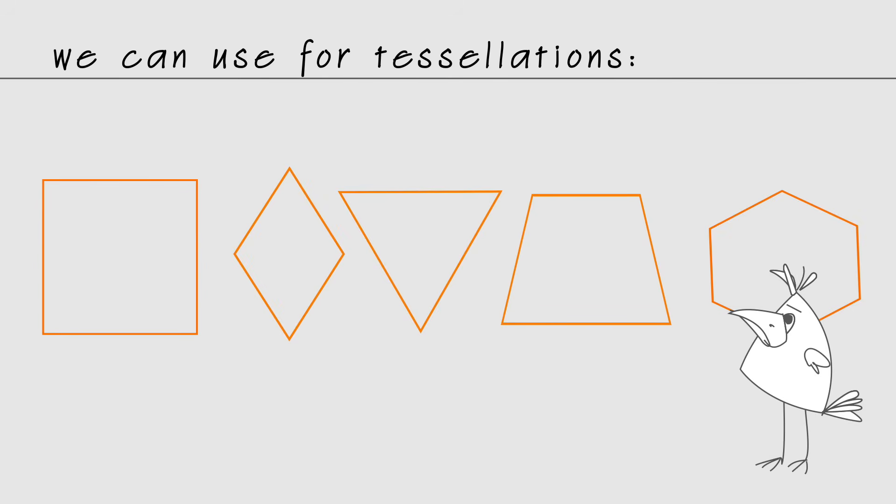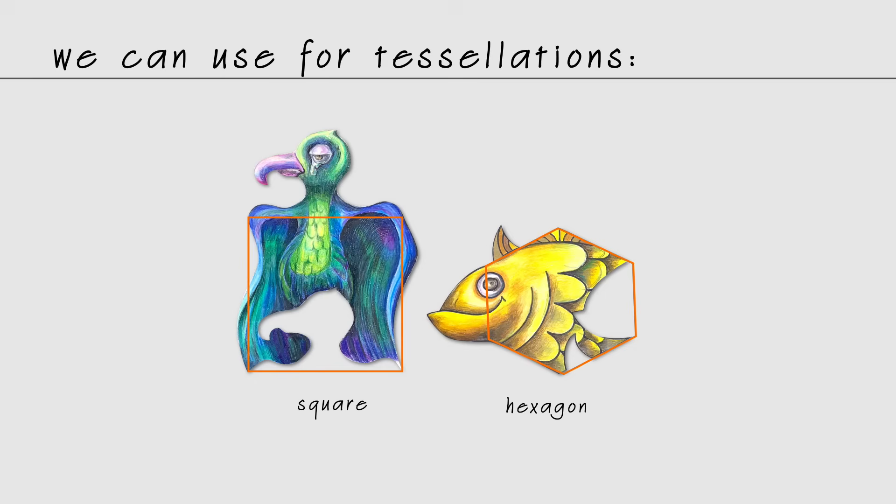So here are the basic shapes that can tessellate: rectangles and squares, rhombus, some triangles, trapezoids, hexagons. But only two shapes will give you plenty of options to construct a tile: square and hexagon.